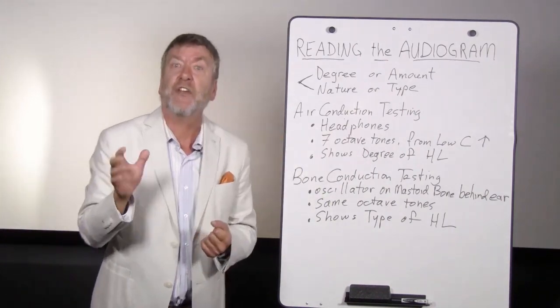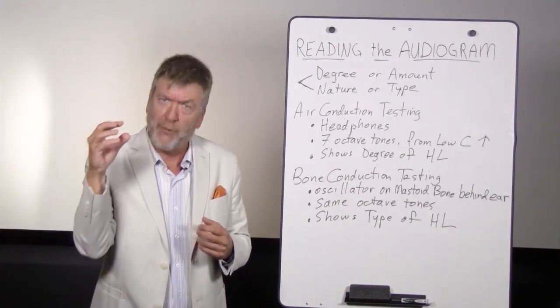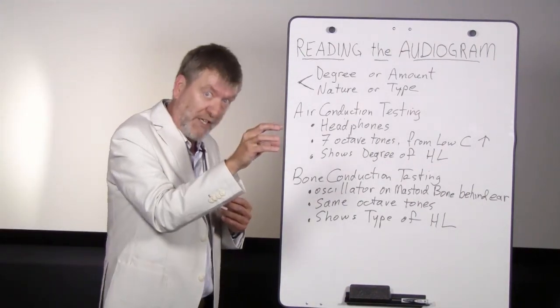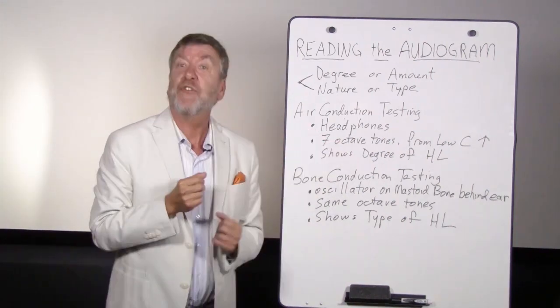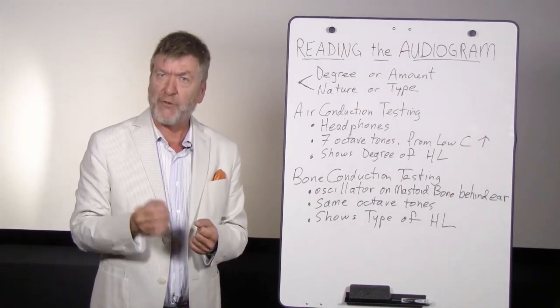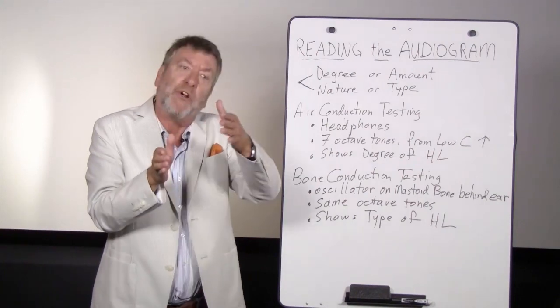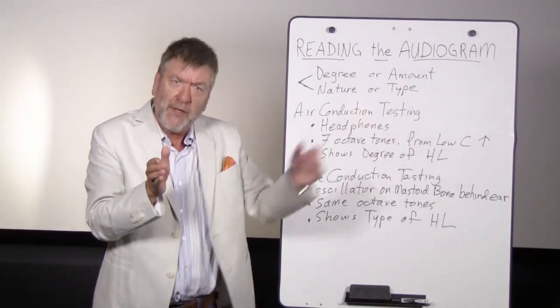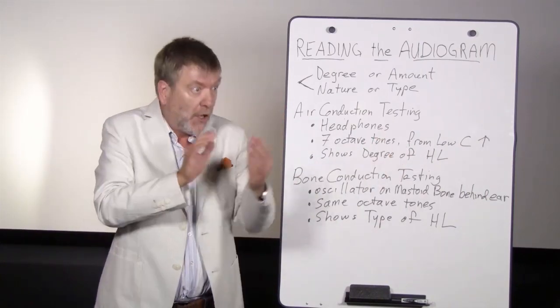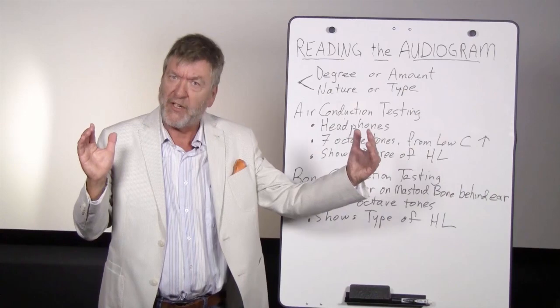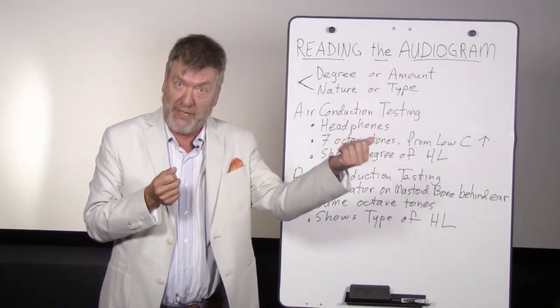Air conduction testing, as I said, is done under headphones. When you're presenting tones under headphones, you're going through the outer, the middle, and all the way to the inner ear and of course up the eighth nerve to the brain. We present seven octave tones. They begin at low C, 125 cycles per second or 125 hertz. We test six more octave frequencies higher. We test at low C, middle C, high C, and four more octaves going higher.